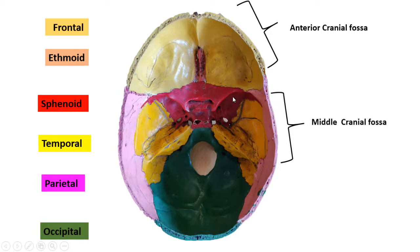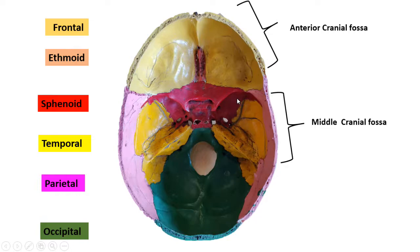Next we have the middle cranial fossa. The anterior side is bounded by the lesser wing of the sphenoid bone. The most medial projection from the lesser wing is the anterior clinoid process. The posterior side is bounded by the superior border of the petrous temporal bone. The lateral side has the inferior portion of the parietal bone, the squamous part of the temporal bone, and the greater wing of the sphenoid bone. And in the center is the body of the sphenoid.